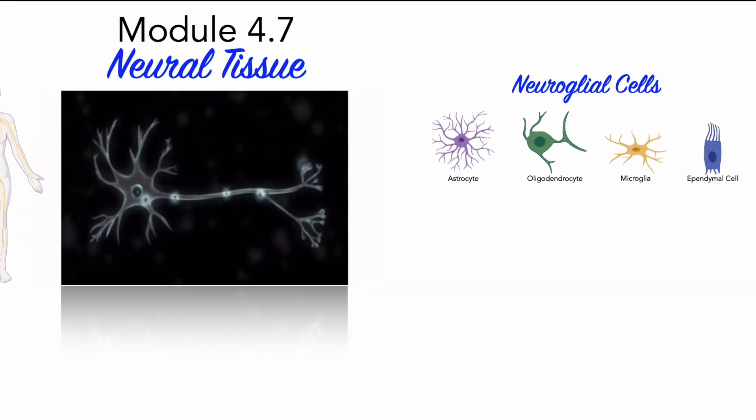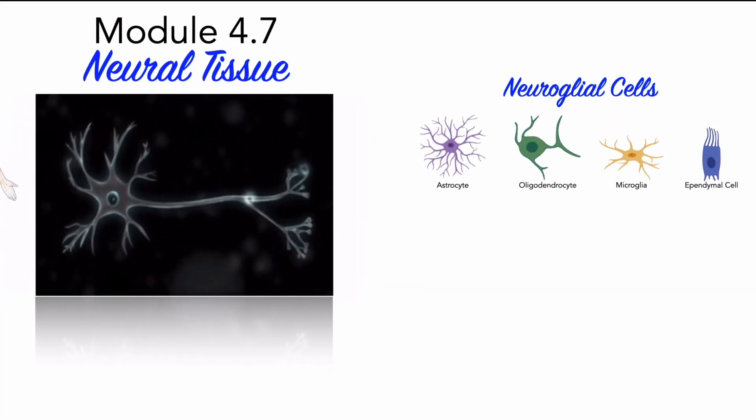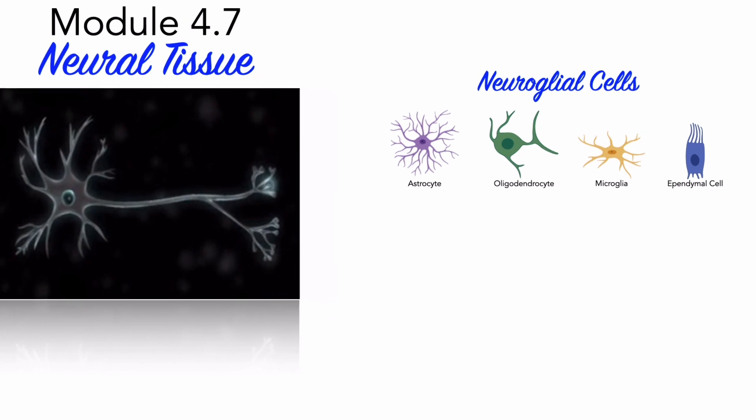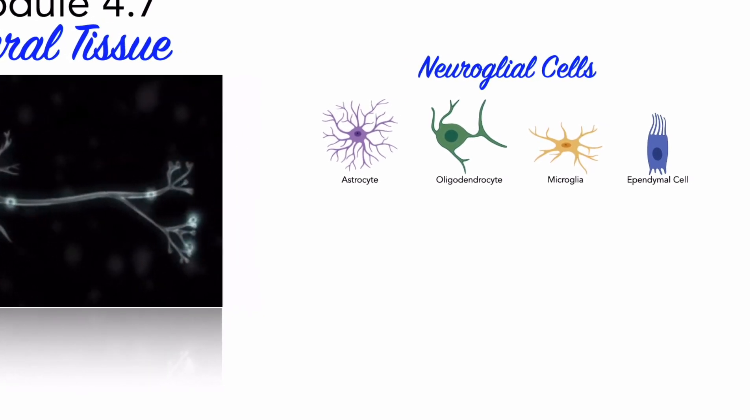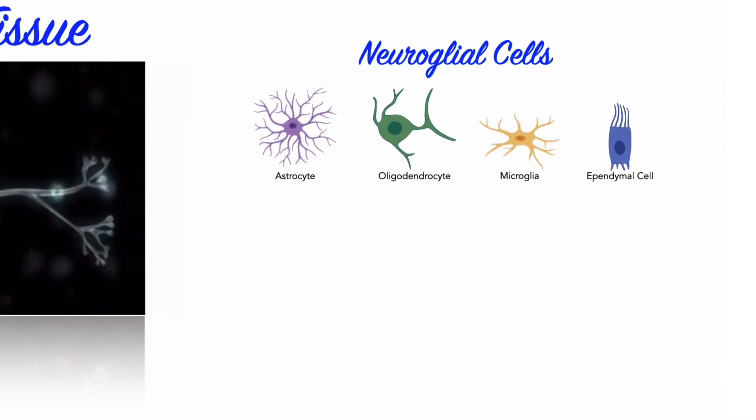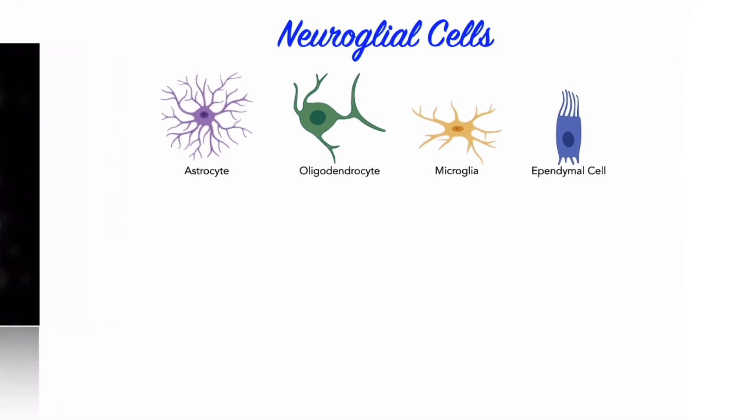Neurons rapidly communicate by sending electrical impulses that result in the release of chemical messengers onto target cells. Our conscious and unconscious thought processes are due to communication among neurons in the brain.